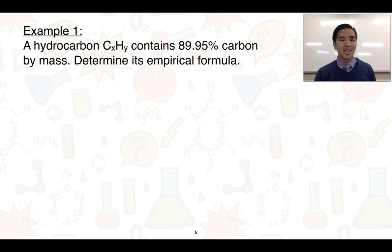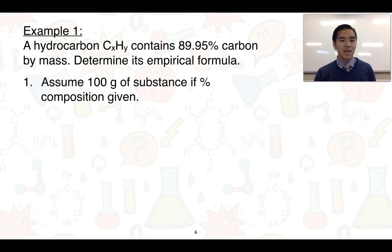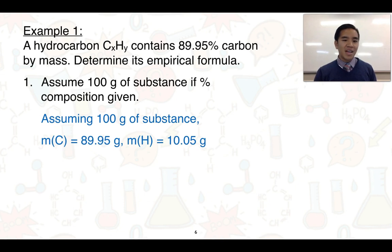Our first example looks at a hydrocarbon that contains 89.95% carbon by mass, and we need to determine its empirical formula. To do this, we firstly assume that we have 100 grams of the substance. This makes it easy to work out how much of that 100 grams is carbon as well as hydrogen. So assuming 100 grams, we have 89.95 g of carbon, and subtracting that from 100 gives us the mass of hydrogen in the sample.